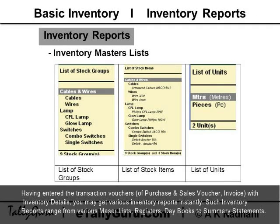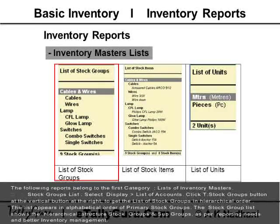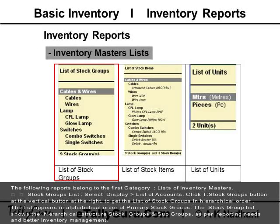Such inventory reports range from various master lists, registers, day books to summary statements. The following reports belong to the first category: list of inventory masters.